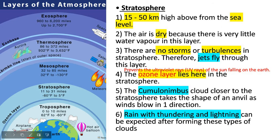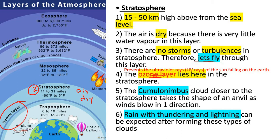The second layer is the stratosphere, which is 15 to 50 kilometers high from the sea level. The air here is quite dry because very little water vapor is present. You don't find any storms or turbulences in this layer, therefore jets fly through it. You will also find the ozone layer in the stratosphere. This ozone layer is important because it prevents ultraviolet rays, which are harmful to us, from reaching the earth's surface — it simply acts as a shield.